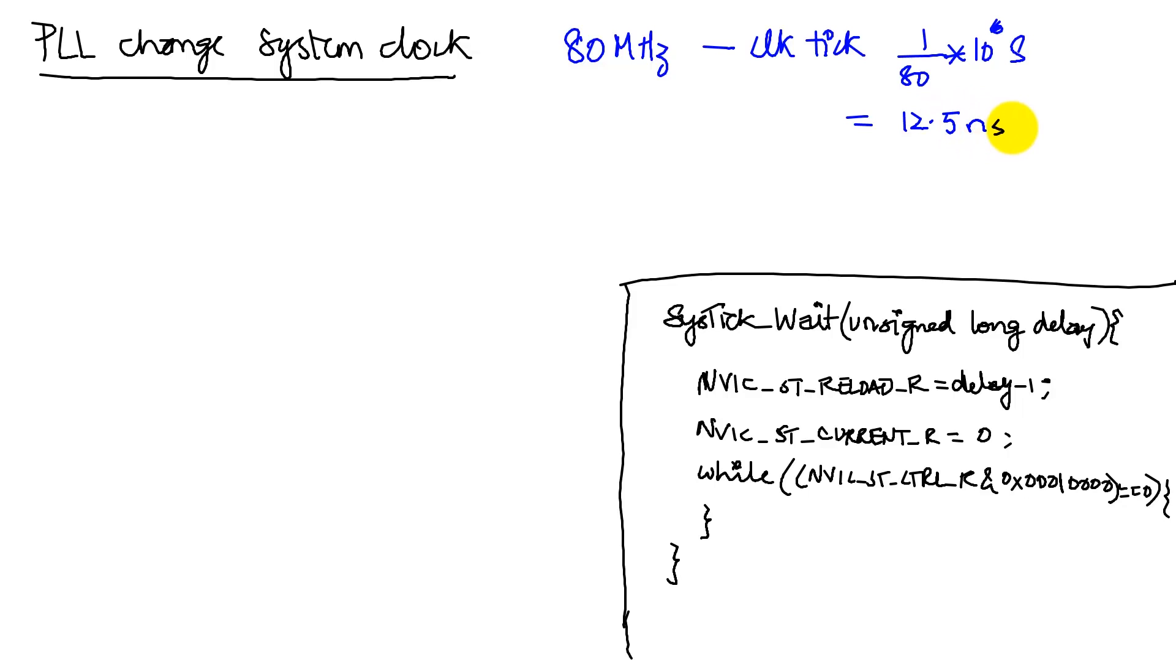Which means that if I use the SysTick counter, the SysTick counter we know is a 24-bit value. It's going to be decremented by 1. Remember, it's a countdown value. So it decrements by 1 every 12.5 nanoseconds.